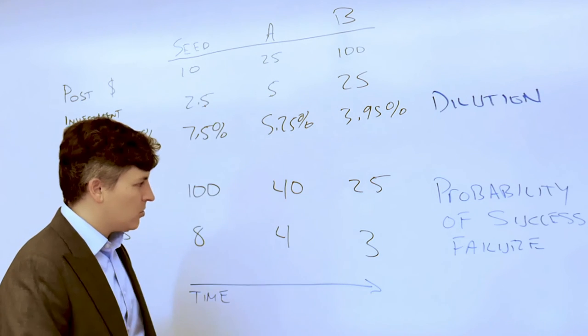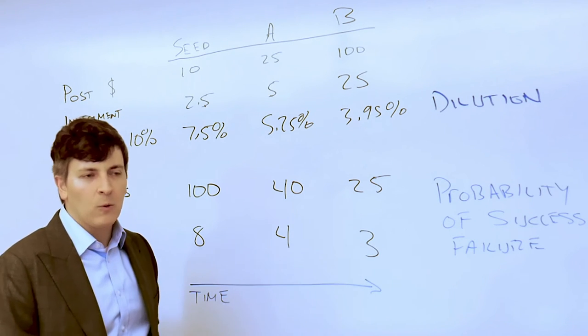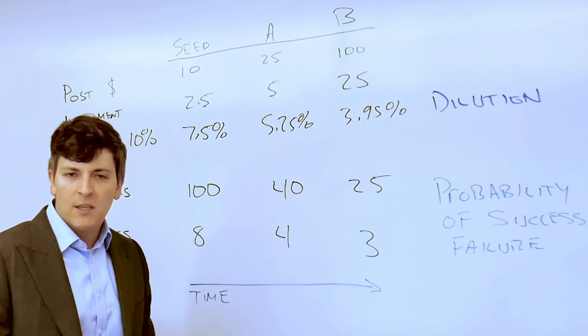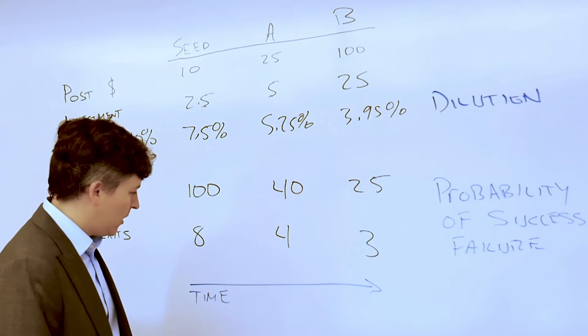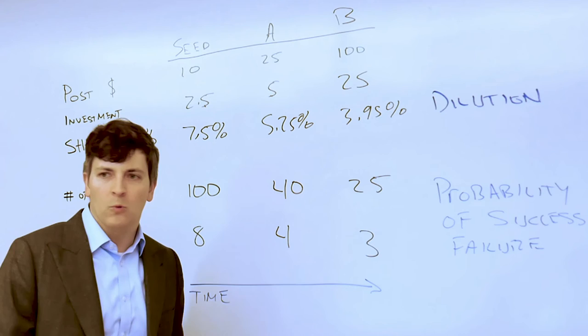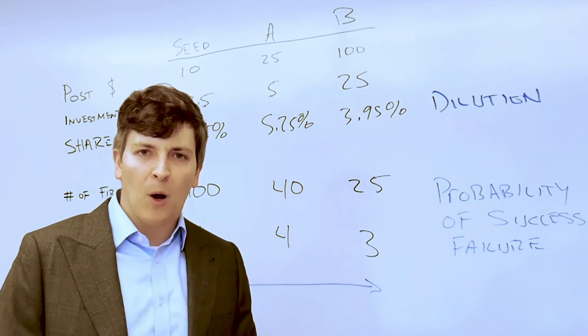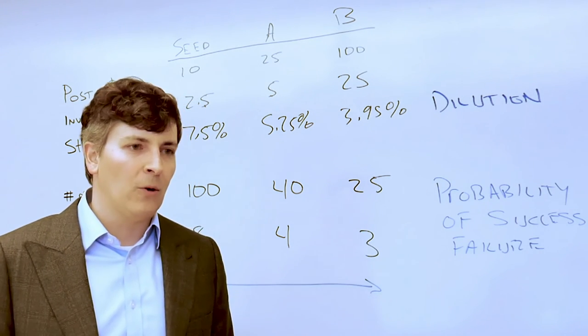And so if you put all of these factors together, it looks like the equity is going to be worth, in this example, somewhere around half a million dollars. And depending on your discount rate and when you see that money in the future, you can get a rough ballpark sense of what that equity might be worth.